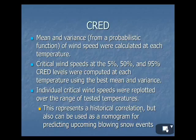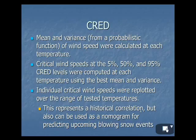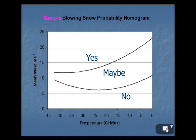The frequency of blowing snow at a given temperature and snowpack age has a cumulative normal probabilistic distribution, so the credibility could be treated with a mean and variance calculated from that probabilistic function — which is detailed in the paper. Then critical wind speeds at the 5%, 50%, and 95% credibility levels were computed at each temperature using the best mean and variance, and these critical wind speeds were replotted over the range of tested temperatures.